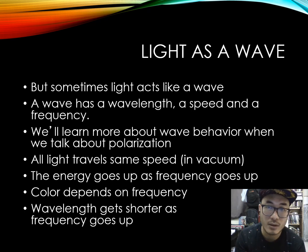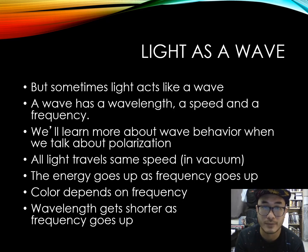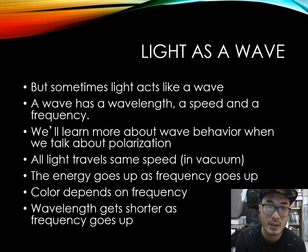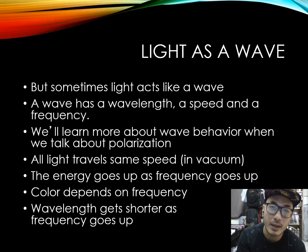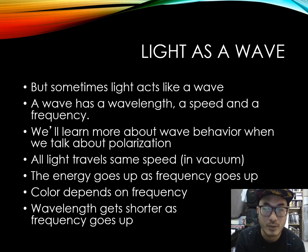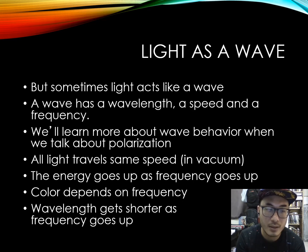Light is also called a particle inside a wave. Sometimes light acts like a wave — as a wave, it has wavelength, speed, and frequency. We learn about wave behaviour when we talk about polarisation. All light travels at the same speed, especially in normal frequencies and also in a vacuum. The energy goes up as frequency goes up, so colour depends on the frequency. Shorter wavelengths create different colours and longer wavelengths will create other colours.